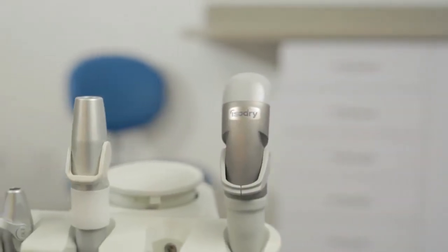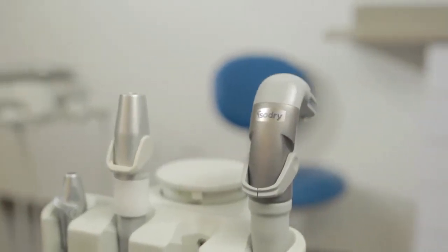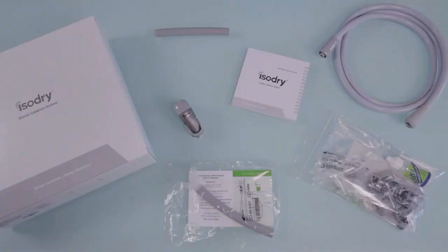Installing your ISO-Dry. To install your ISO-Dry dental isolation system, first ensure you have all the proper components ready. Your ISO-Dry comes with instructions for use, ISO-Dry control head, vacuum hose, hose connector, Y-Adapter kit, and accessories.